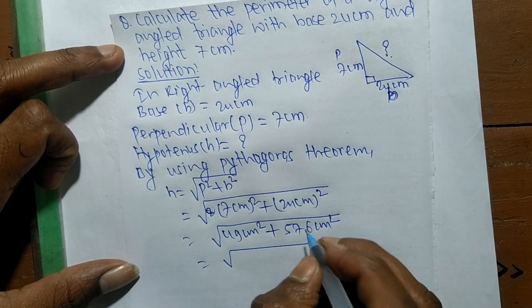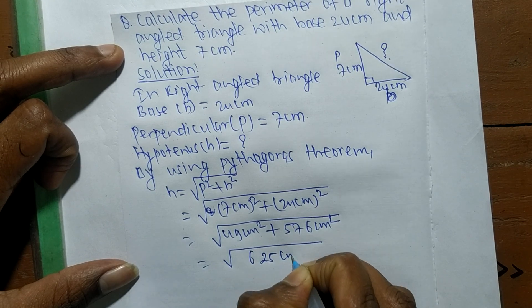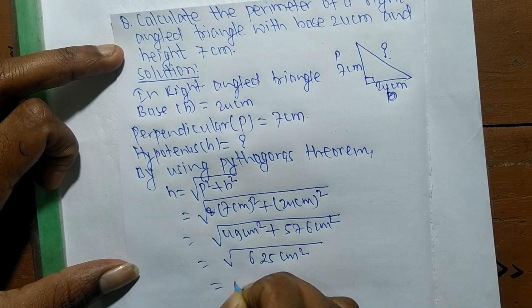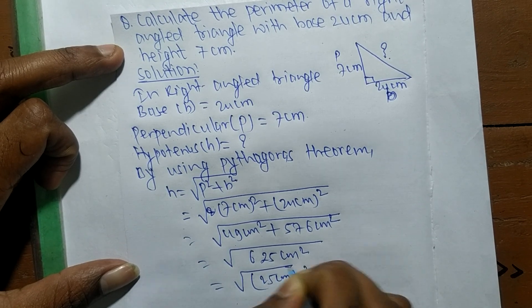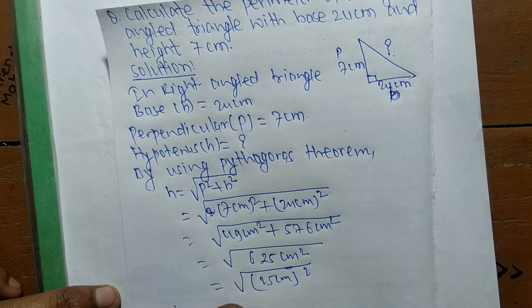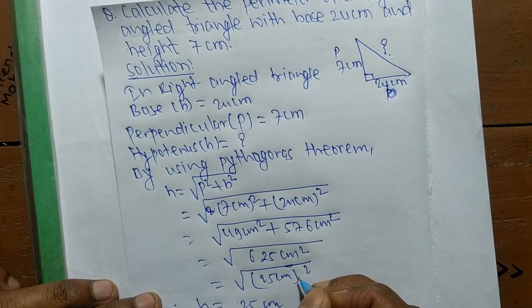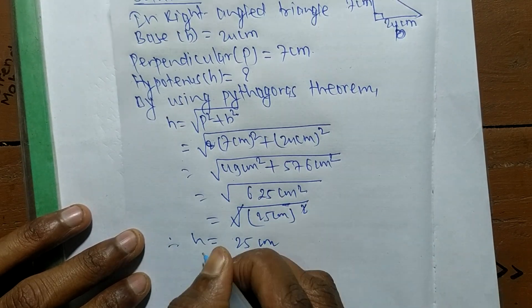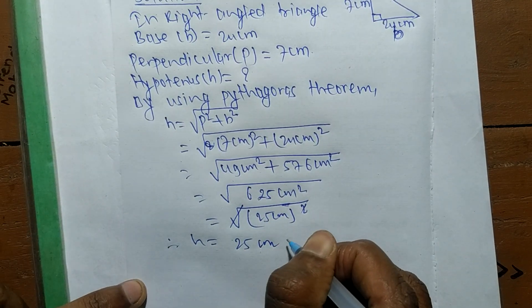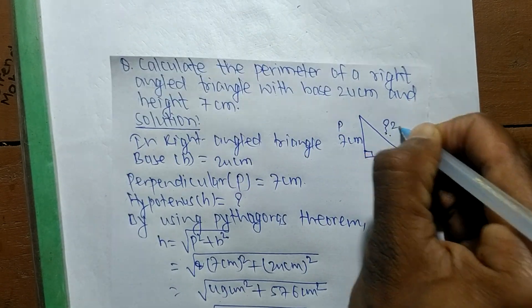7 centimeters squared equals 49 centimeters squared, plus 24 centimeters squared equals 576 centimeters squared. So 49 plus 576 equals 625 centimeters squared, which is the square root of 625 centimeters squared equals 25 centimeters.